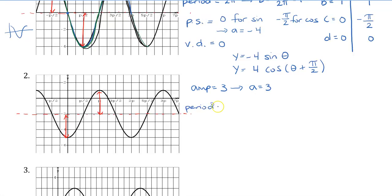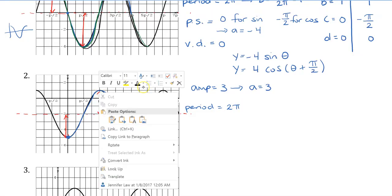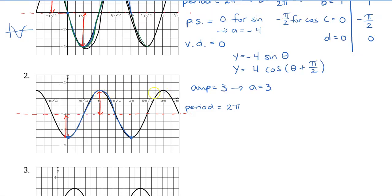For the period, I'm going to find a place where it repeats. If I take this point here and go to the next corresponding point, it is 2π. You can also pick a maximum and go to the next maximum — that distance is also 2π. So again, my B value: remember period equals 2π divided by B, so B equals 2π divided by the period, which is 2π. So the B value is 1.